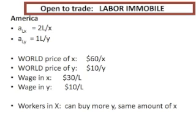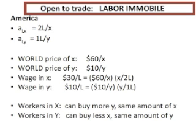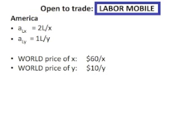Workers in the X sector can still buy one-half a unit of X as before, but they're able to buy more Y now than they did prior to opening up to trade. Workers in the import-competing sector Y definitely get hurt — they can buy less X than before. So as long as they buy both goods, they'll definitely be worse off.